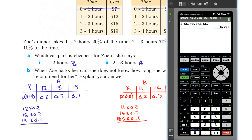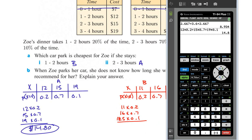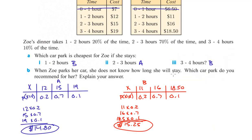Adding everything up, the expected value for car park A is $14.80. When we calculate everything for car park B, we get $15.25. So when Zoe parks her car and doesn't know how long she's going to stay, we recommend car park A, because the expected value is a little bit less than car park B.